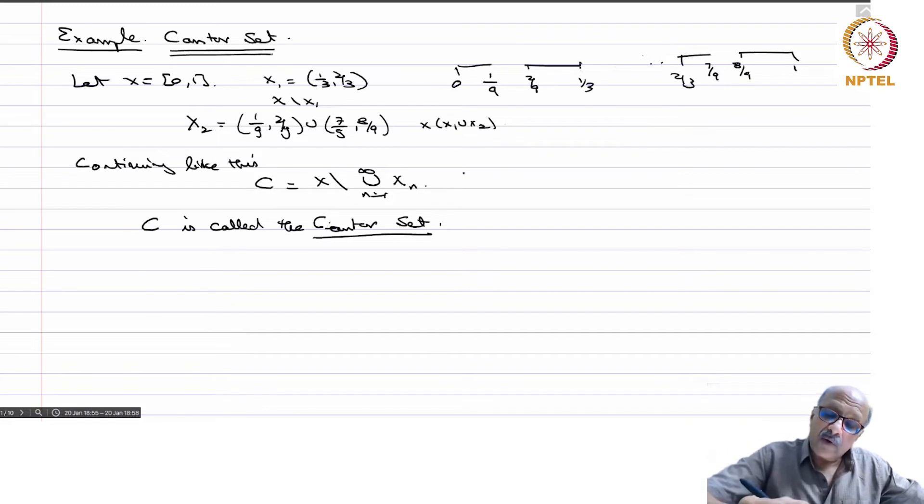So next time what would I do? I would remove a portion here and then I would remove a portion here and I would remove a portion here and so on. So I will get something very moth-eaten, everything will be eaten up, there will be some collection of points and you have this.